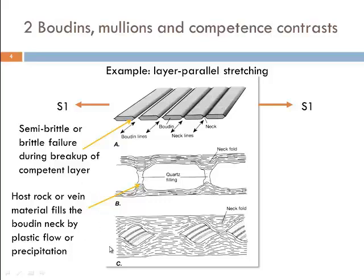At the bottom diagram, we see asymmetric Boudinage. Here the original layering shows that Boudins rotated after breakup into individual bodies. Please keep in mind that these are three-dimensional rod-like structures. Such rotation of individual Boudins after breakup of the competent layer is interpreted as non-layer-parallel extension. As soon as you extend not parallel to the competent layer but oblique to it, the result will be that after Boudinage the individual Boudins will rotate.